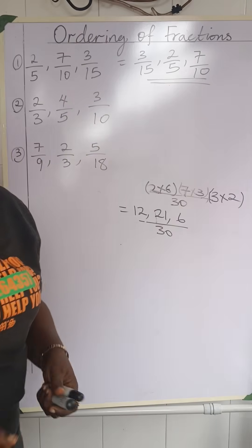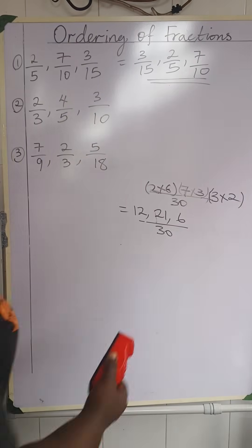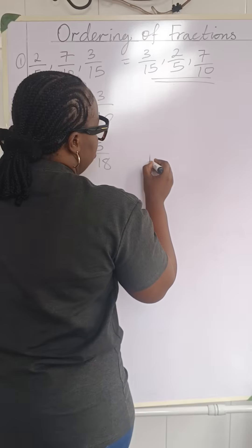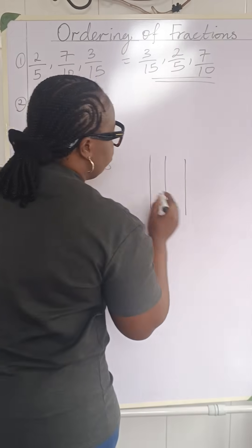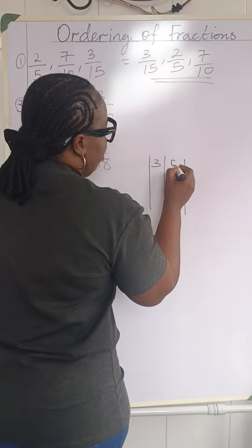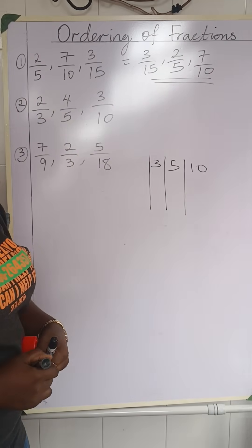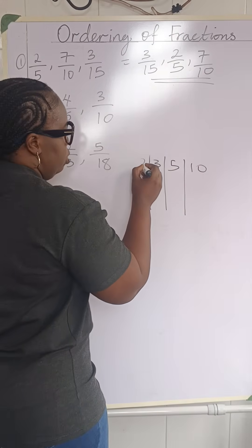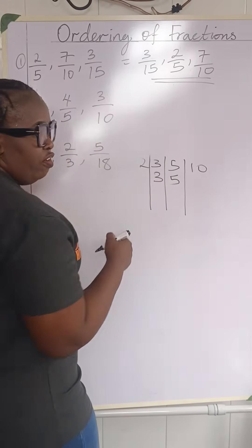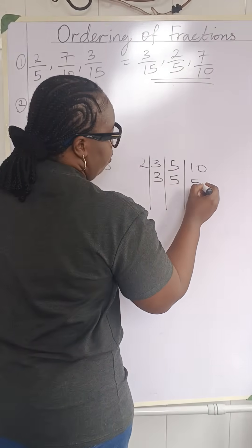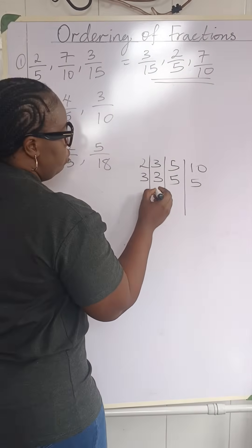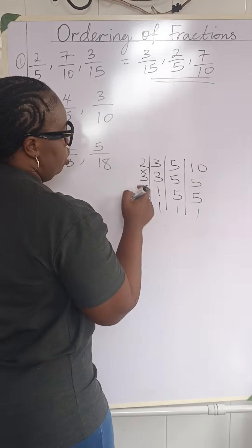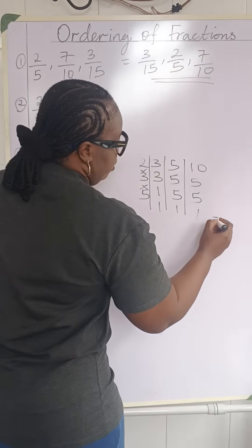Now let's do number 2, which is 2 over 3, 4 over 5, and 3 over 10. We're still going to use the same method. First we find the LCM for the denominators 3, 5, and 10. The smallest prime we can use to start dividing is 2, because we have 10. Two goes into 3 — can't, bring it down. Two goes into 5 — can't, bring it down. Two goes into 10 is 5. Then using 3: 3 goes into 3 is 1, bring down 5, and 5 remains.